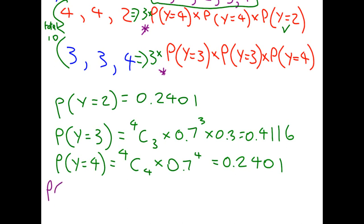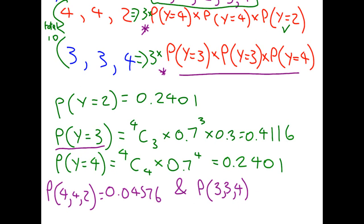So the probability of getting a 4, 4, and a 2 in any order, 0.2401 times 0.2401 times 0.2646, and remember, timesing by 3, which gives us 0.04576. We can do the same thing, the probability that we get a 3, 3, and a 4, multiplying what we said here with the values for the probability of y equals 3 and the probability of y equals 4. And if you put that into your calculator, you'll get 0.1220.